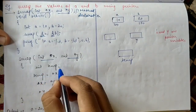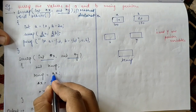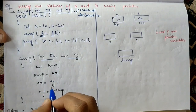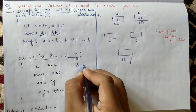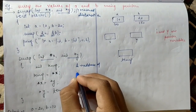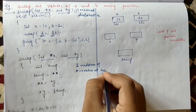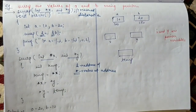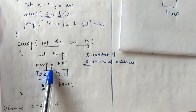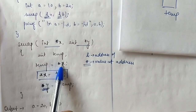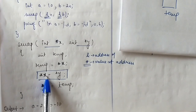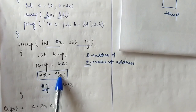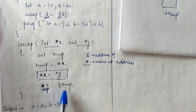We take a temp variable and assign temp equal to star x. The star operator is the value-at-address operator — ampersand is address-of, and star is value-at-address. So temp is initialized to the value at address x, since x is a pointer. Then star x equals star y, meaning the value at address x is set equal to the value at address y. Finally, star y equals temp, meaning the value at address y is set to the value stored in temp.